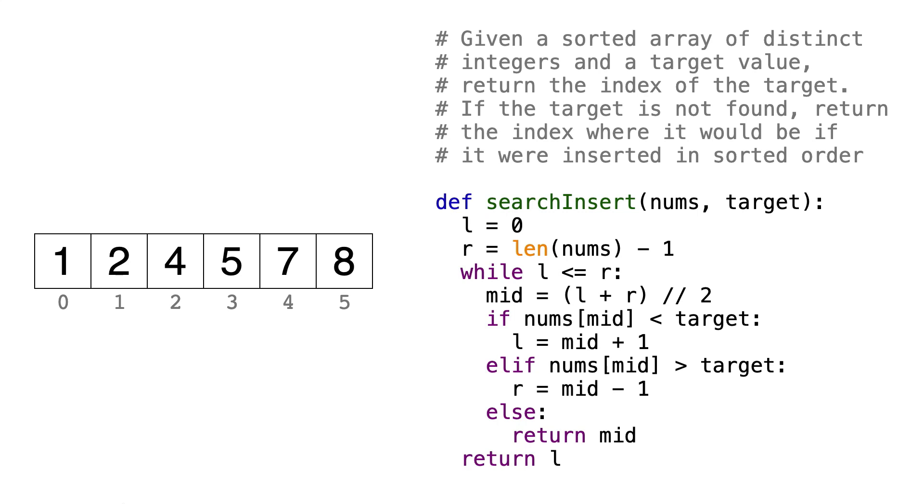In this video, we'll go over LeetCode question number 35, search insert position. Given a sorted array of distinct integers called nums and a target value, we have to return the index of the target in the array. If it doesn't exist, then we'll have to return the index that it would be at if it were inserted in order.